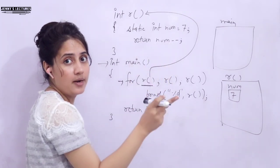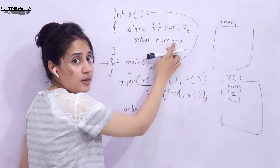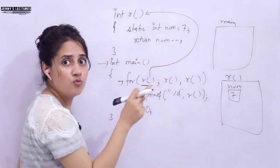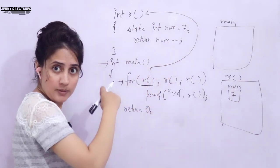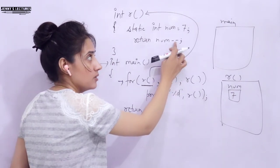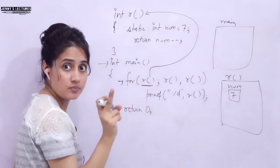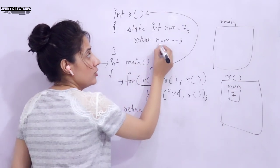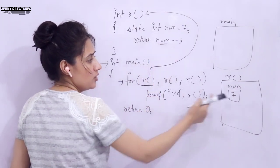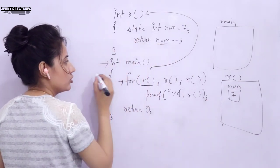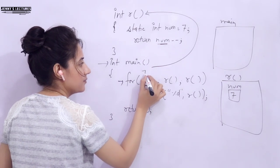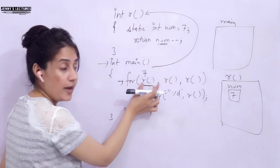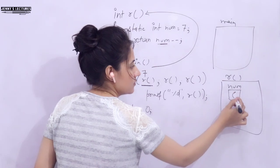Now, the line is return num--. The -- is post-decrement, so first the original value of num is returned, and after that the value is modified. The original value of num is 7, so it returns 7. Control goes back to the initialization part of the for loop — we now have 7 there — and then the value of num becomes 6.